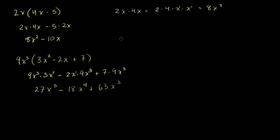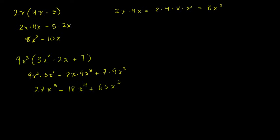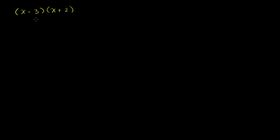Now let's do one where we are multiplying two binomials, which you're going to see very, very frequently in algebra. Let's say you have x minus 3 times x plus 2. I want to show you that all we're doing here is the distributive property. Let's pretend x minus 3 is one big number — if you knew what x is, this would be some number. So let's distribute x minus 3 onto each of these terms: x minus 3 times x, plus x minus 3 times 2.